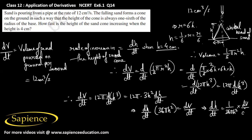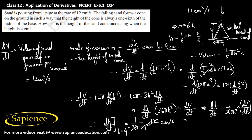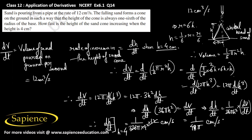So dh/dt equals (1 / 36π h²) · dV/dt. We have to find dh/dt when h = 4 cm. That will be 1/(36π · 4²) · 12, which gives the rate of increase in the height of the sand cone in cm per second. This is the final answer.